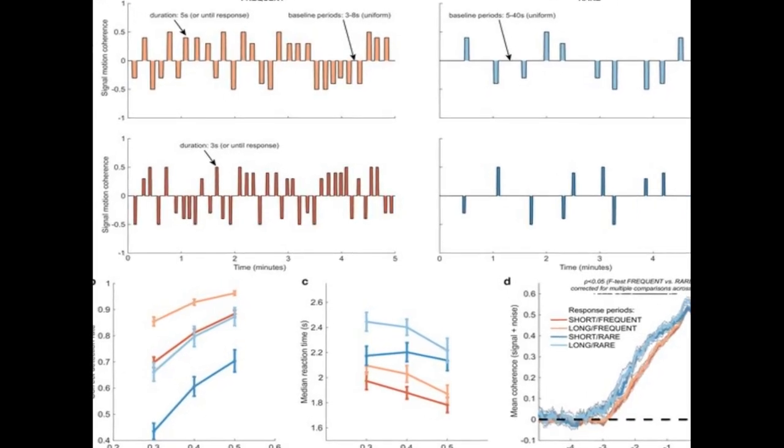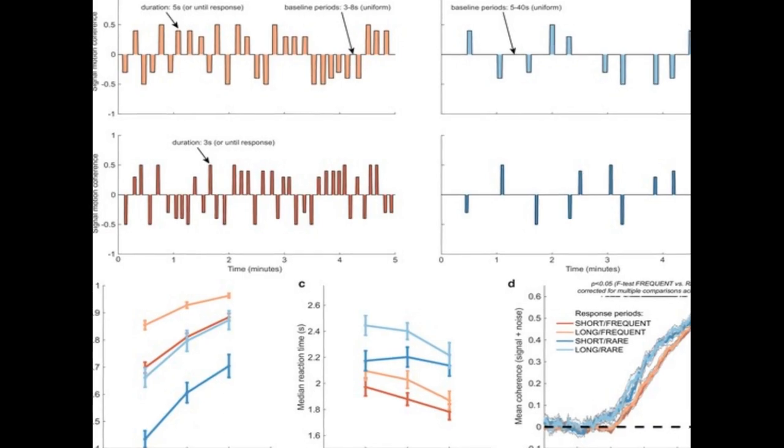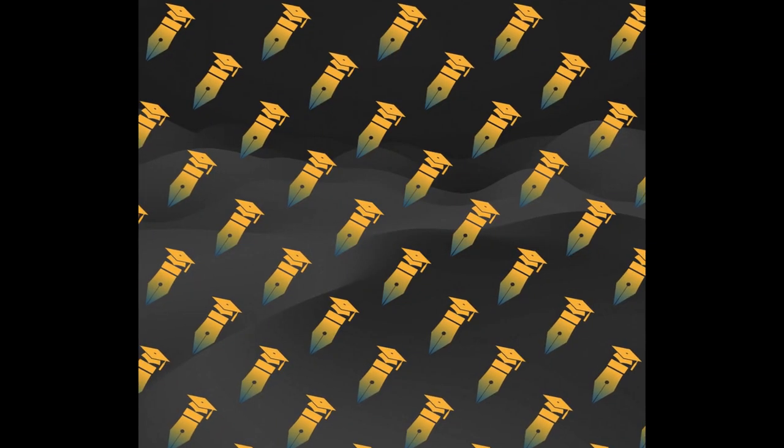A computational model based on leaky evidence accumulation suggests that these findings can be accounted for by a shift in decision threshold between different environments, which is also reflected in the magnitude of pre-decision EEG activity.